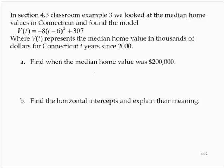Part A asks us to find when the median home value was $200,000. So we want V(t) to equal 200. Recall that this is the value in thousands, so 200,000 means 200 for this application. So we want V(t), that's -8(t-6)² + 307, to equal 200.